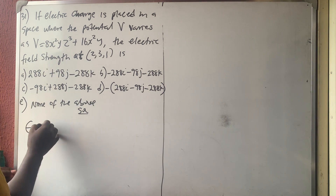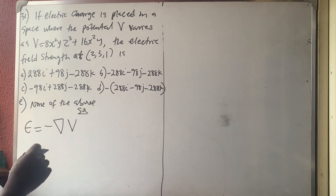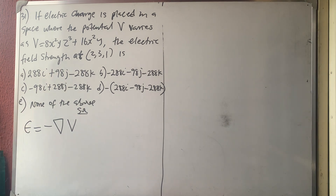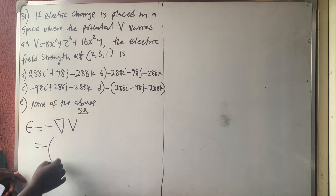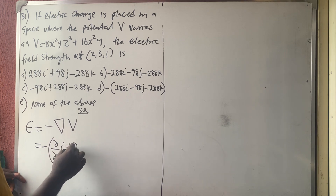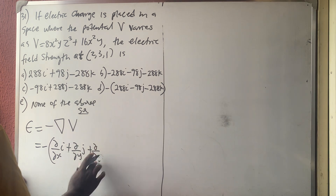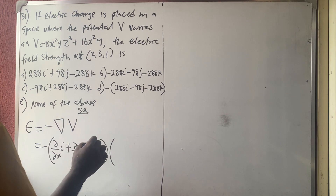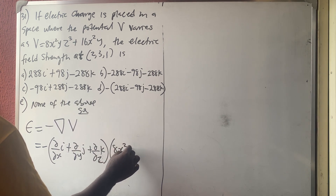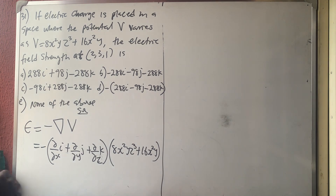For question 31, we know that E equals minus grad V. The gradient operator is (∂/∂x)i + (∂/∂y)j + (∂/∂z)k. Our V is 8x²yz³ + 16x²y.